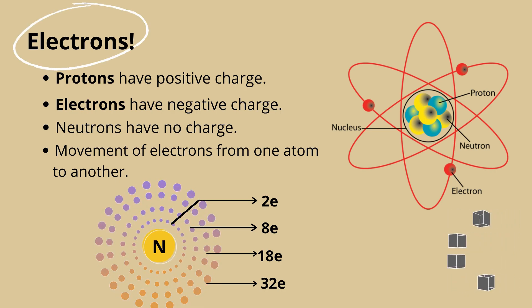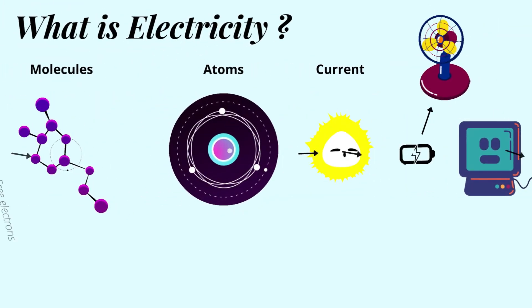These shifting electrons are electricity. And that's how electricity is obtained.